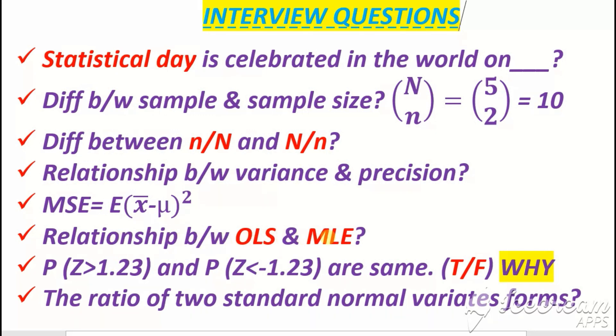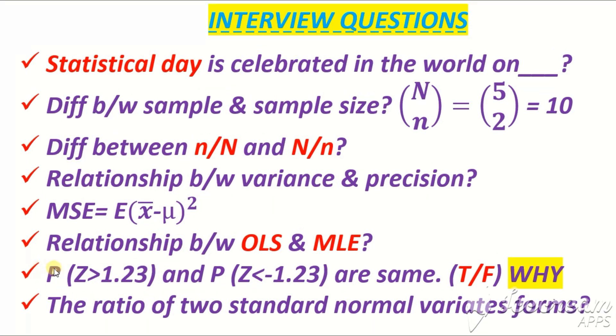Relationship between OLS and MLE? Next question: probability that standard normal variable is greater than 1.23 and probability of Z less than minus 1.23 are the same - true or false? This is true.